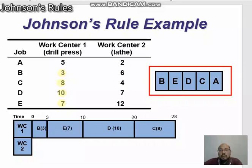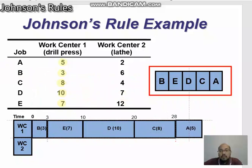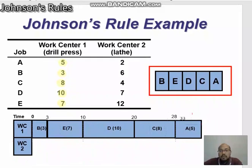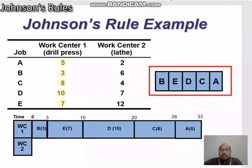The last job at work center one is job A, which takes 5 hours. So we have completed the jobs at work center one — a total of 33 hours.